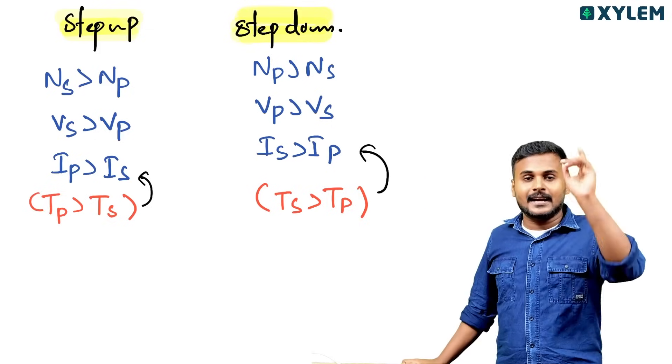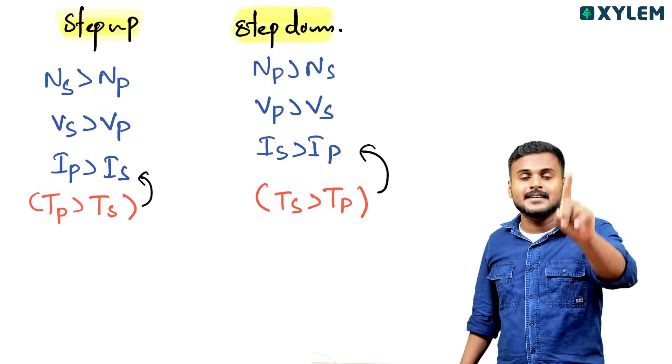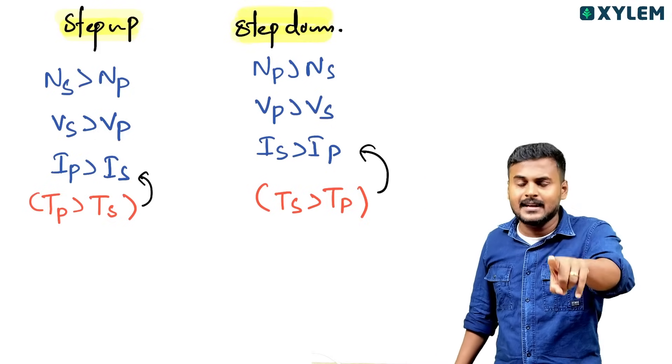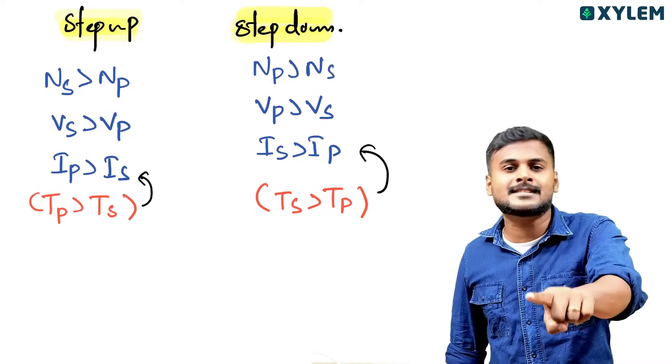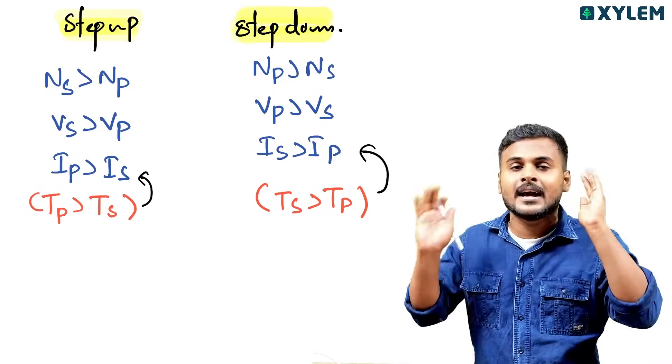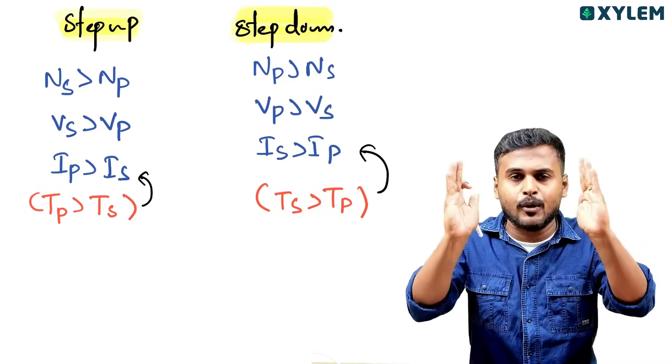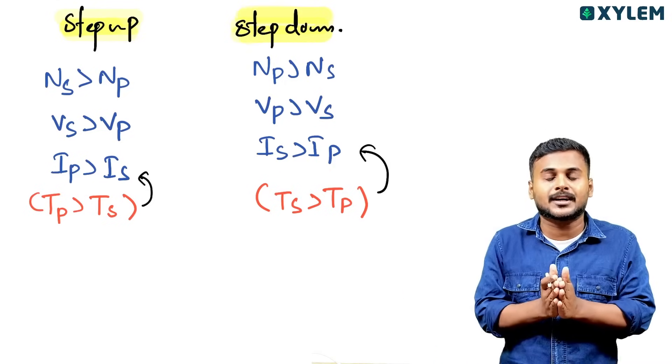To summarize: number of turns, voltage, current — all are related. This is very clear for both step-up and step-down transformers.